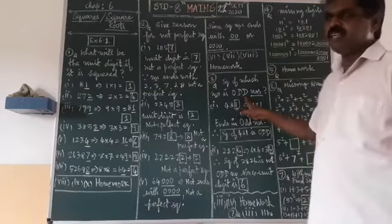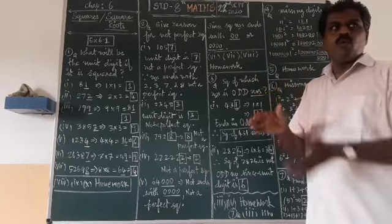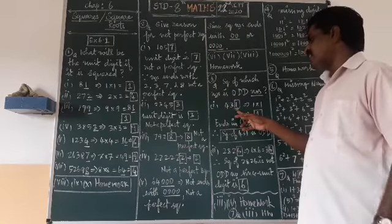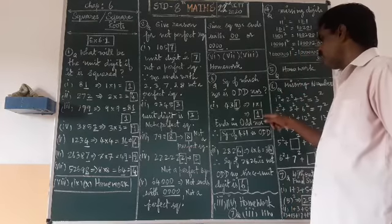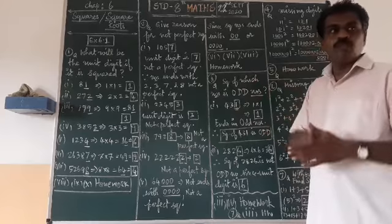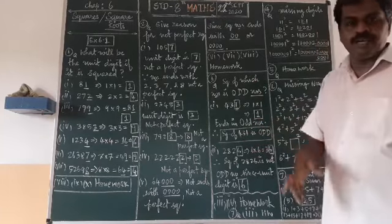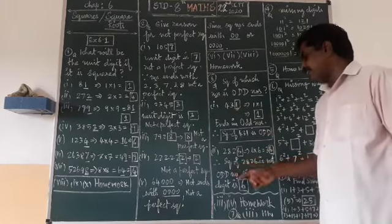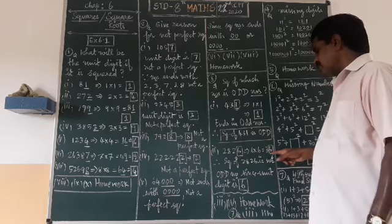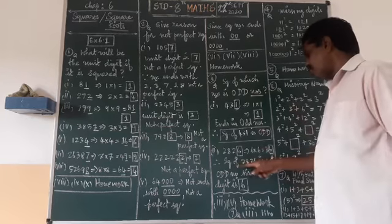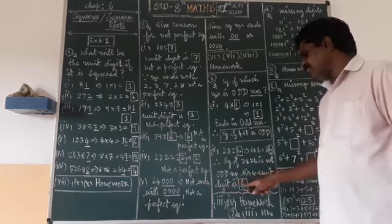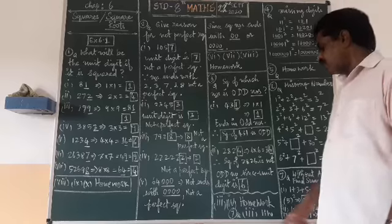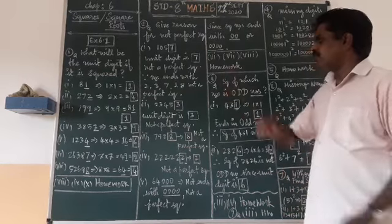The third question asks: the square of which number will be an odd number? For 431: the last digit is 1, which is odd. Multiply 1 into 1 gives 1, so the square of 431 ends with 1 — it is an odd number. For 2826: the last digit is 6. Multiply 6 into 6 gives 36, and the unit digit is 6, which is even. So the square of 2826 is not an odd number. The third and fourth problems take as homework.